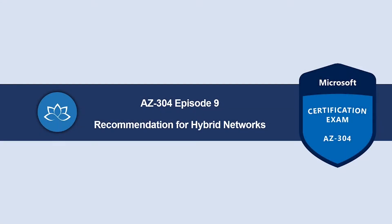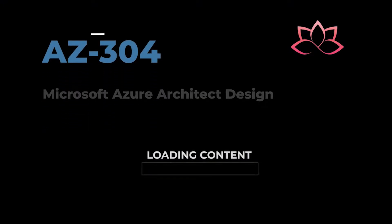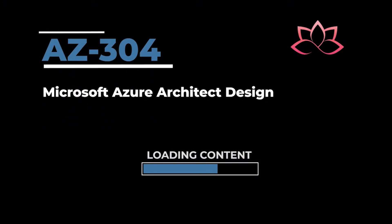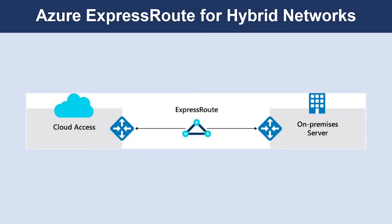Hey, welcome back. In this episode, we're going to learn about recommendations for hybrid networks. The topic of discussion is Azure ExpressRoute. Azure ExpressRoute is an Azure service that allows you to extend your on-premises network over a private connection.